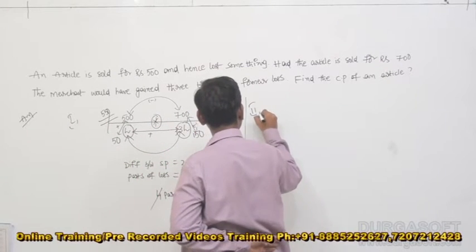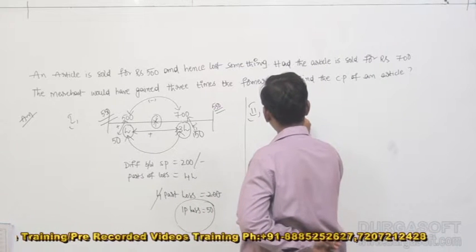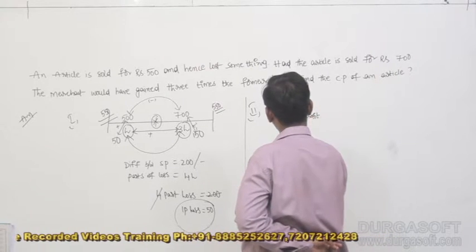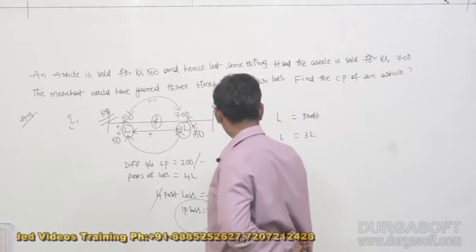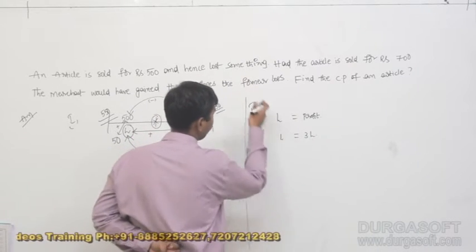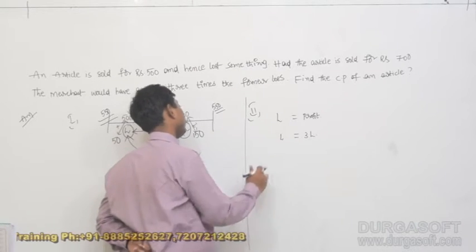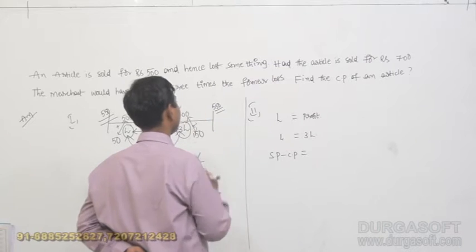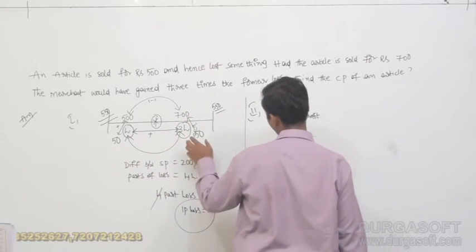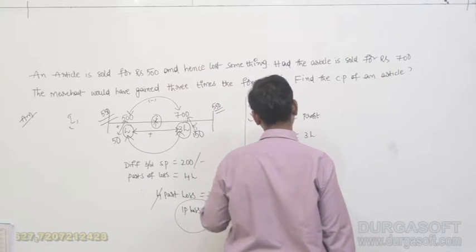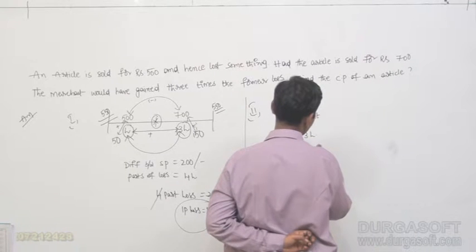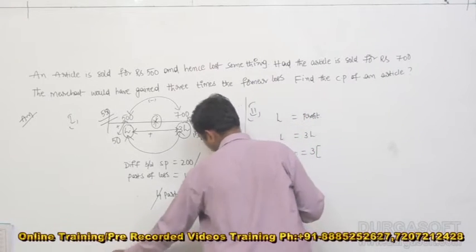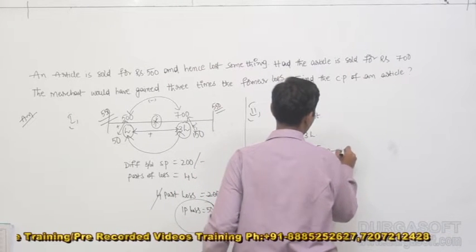I am ready to talk about the second method. Loss is equal to profit; profit is nothing but three times of a loss with reference to the given information. In the sense, here selling price minus cost price is nothing but profit, and cost price minus selling price is loss.